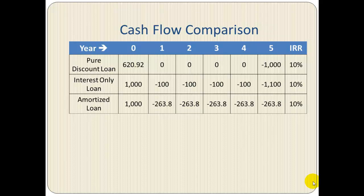The IRR of the interest-only loan is ten percent, so the borrowing cost is ten percent as well. With the amortized loan, we have an inflow of one thousand dollars initially and then five payments of two hundred and sixty-three dollars and eighty cents, representing an IRR of ten percent. So the cost of borrowing for each loan type is the same — ten percent. The structure of the payment is the primary consideration for the borrower and the lender.